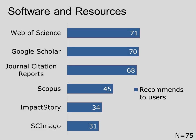We wanted to know a bit more about the tools libraries are recommending to their users. The top six resources responding libraries are already recommending include large subscription-based citation databases, such as Web of Science and Scopus, along with the freely available Google Scholar. There are two resources more specific to journal metrics found in the top six, and a relatively new resource, Impactstory.